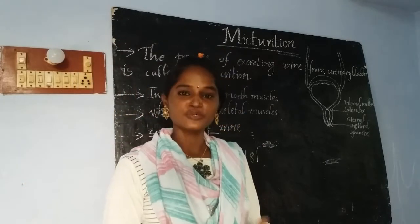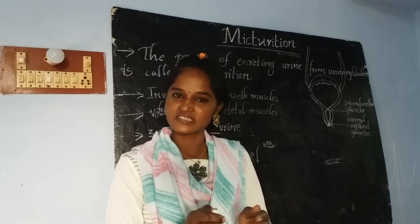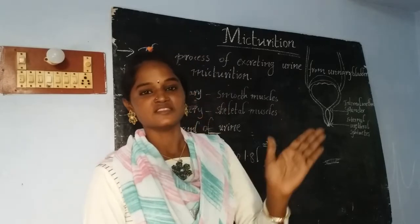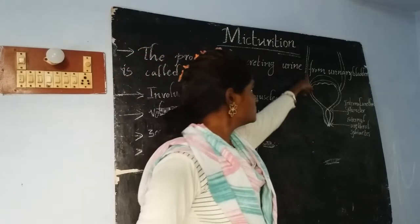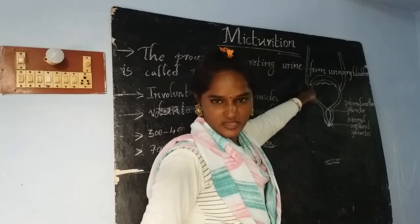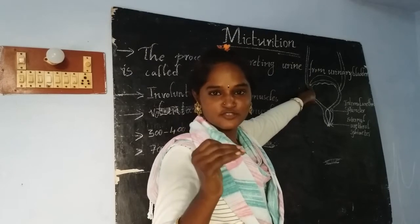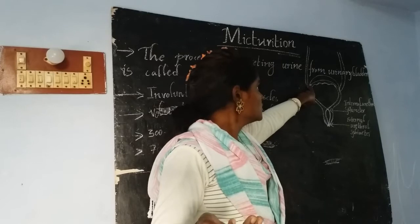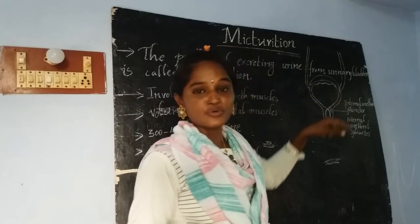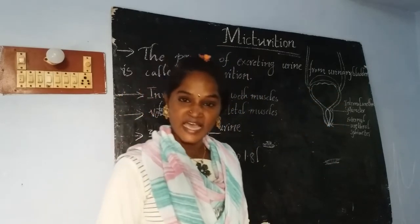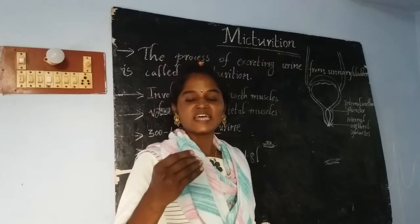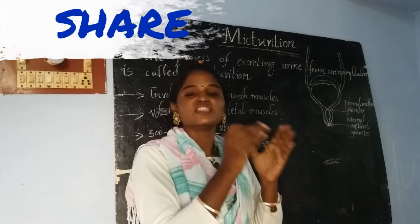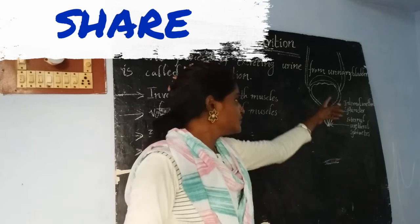Urine is first collected in the collecting ducts. Later it enters into the pelvic region — the pelvis. Then it travels into the ureters by using a movement called as peristalsis. And by the help of gravity, the urine travels and reaches the urinary bladder.